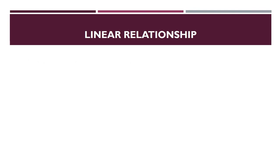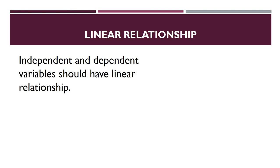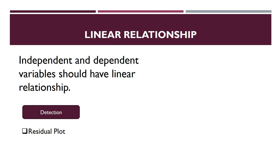The first assumption is the linear relationship. The independent and dependent variables should have a linear relationship. We assume there is a linear relationship between the parameters. If the true relationship is not linear — meaning you are getting a curvilinear relationship — then the results will not be BLUE and we will get biased results. To check this, we can make a residual plot.